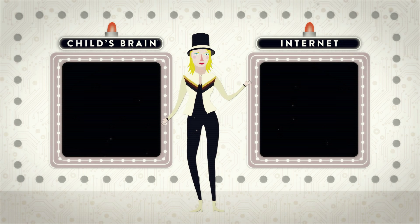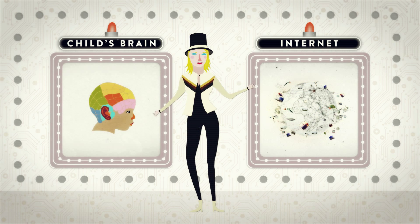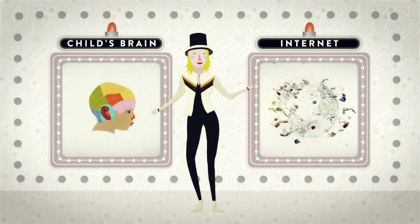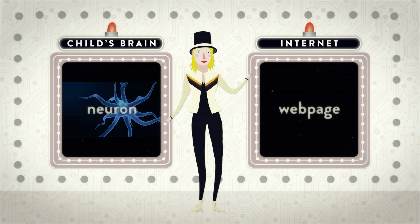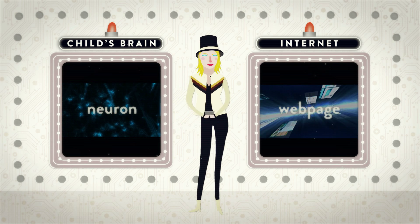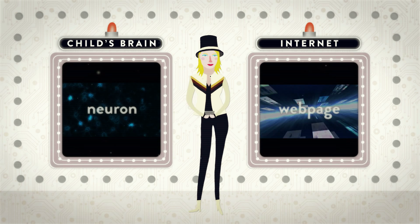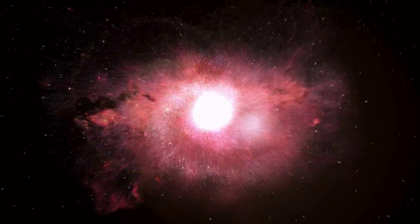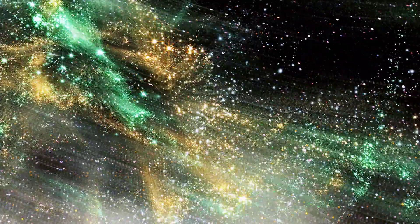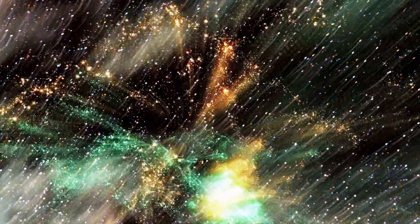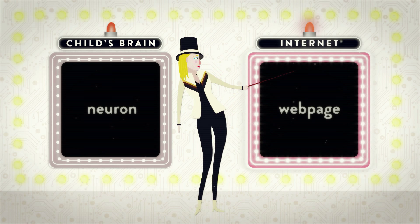Let's start with size. Obviously the internet seems like a larger entity than a child's brain. But what does that mean in terms of our analogy? We could say that a neuron in the brain would be like a web page on the internet. A human at any age has about a hundred billion neurons in the brain. But the internet has ten times that — one trillion web pages. So with this analogy, the internet is bigger.